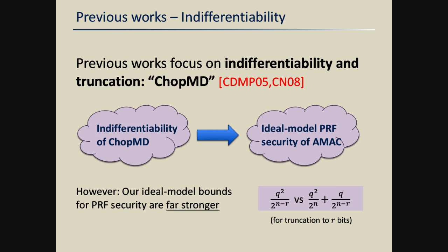We are not the first to analyze this type of construction. So far, analysis of variants of Merkle-Damgård with truncation have only been studied in the context of indifferentiability. In particular, the work by Coron et al. that introduced indifferentiability for hash functions analyzed a chopped MD construction — a Merkle-Damgård construction with truncation — with the goal of getting a keyless hash function. The bounds you get from that approach are too weak and do not highlight the key feature we obtain through our direct analysis for PRF security.